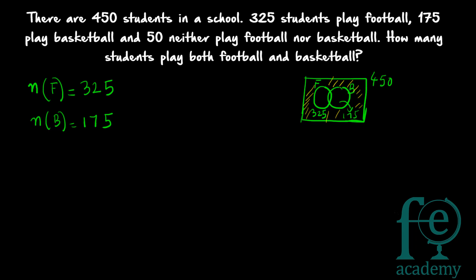We have to find out this shaded or shared portion — how many students are playing both basketball and football. That darkened overlapping region is what we need to find. There is a formula for doing these kinds of questions.